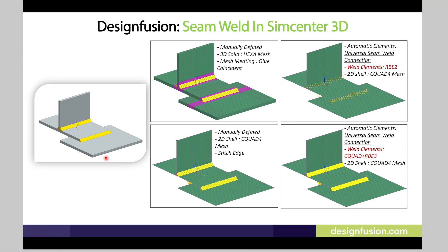Welcome to DesignFusion YouTube channel. In this video we are going to see how we can define seam weld in Simcenter 3D for simulation purposes. Here you can see I have three plates connected together using a T-weld joint and L-weld joint. In Simcenter 3D there are various ways of defining seam weld. You can use a manual method where you use 3D solid geometry and mesh it with a 3D hex mesh, and connect geometry using a glue coincide connection.